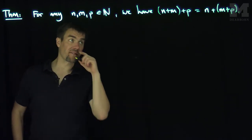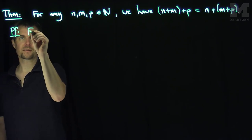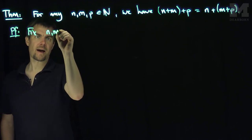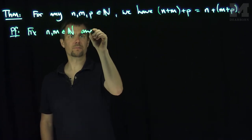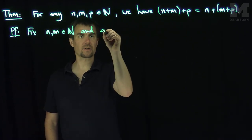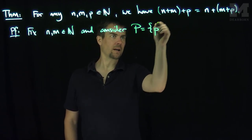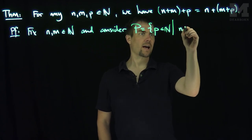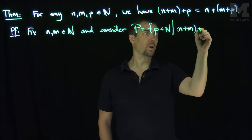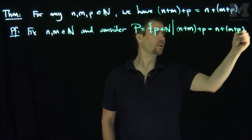So we're going to prove this by fixing n and m. So we'll fix n and m in N. And consider the set—let's change the notation a little bit here—and consider the set P capital of all p natural numbers such that (n+m)+p is equal to n+(m+p).